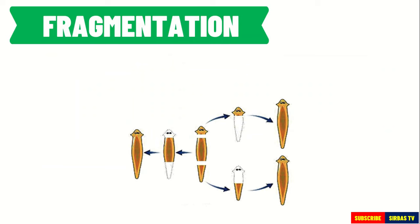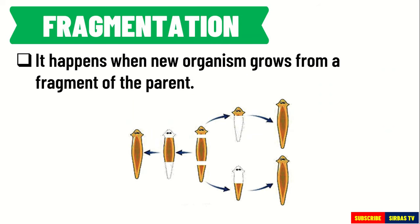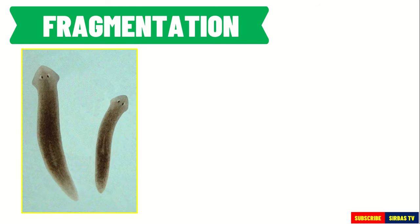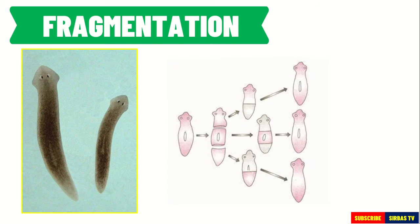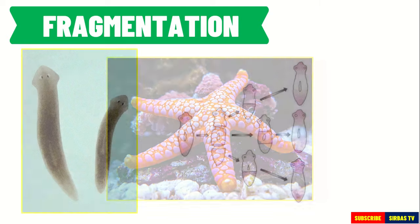Next is fragmentation. Fragmentation happens when a new organism grows from a fragment of the parent. Each of these fragments develops into matured, fully grown individuals. A good example of an organism that reproduces through fragmentation is a planarian. When a planarian is fragmented into different pieces, each piece can develop into a matured and fully grown individual planarian. Other examples of organisms that perform fragmentation are starfish, or sea star.